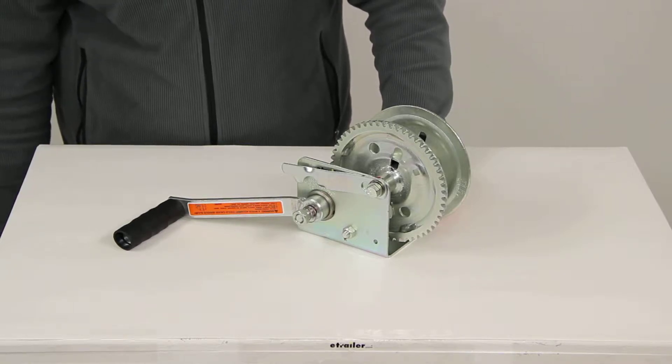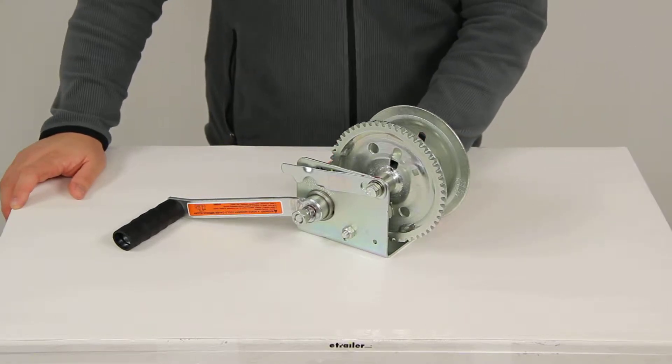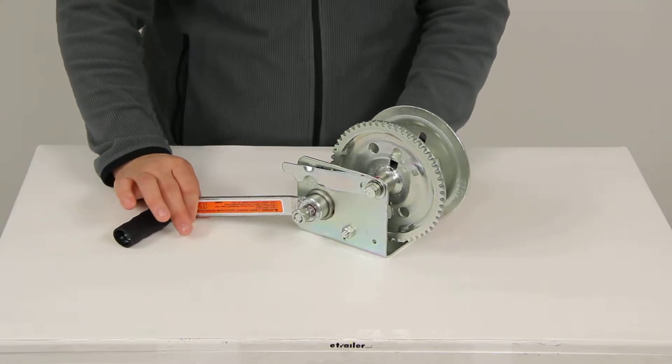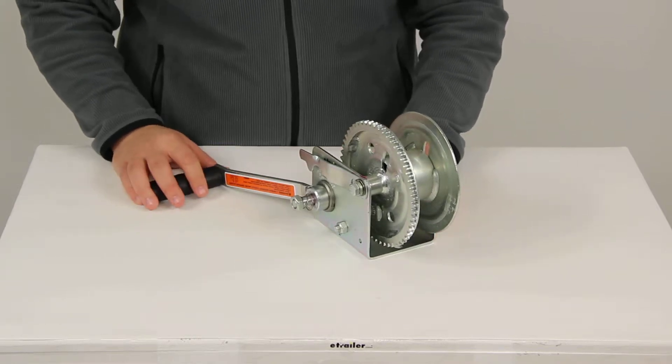Today we'll be reviewing part number DL14993. This is the Dutton Lanson Freewheeling Brake Winch. It's going to give us a capacity of 1,200 pounds. A 50 pound minimum load is required for the winch to operate properly.